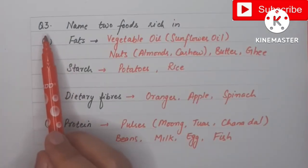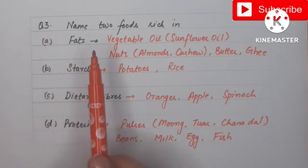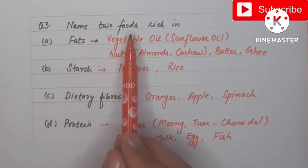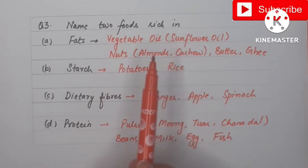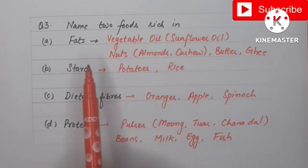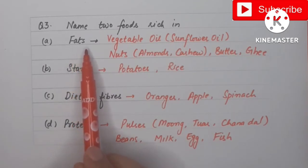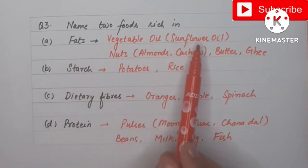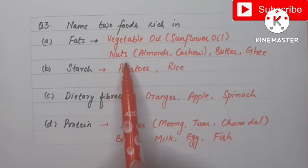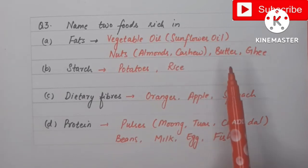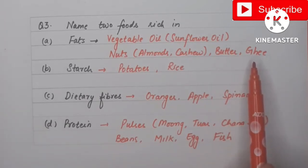Now moving to question 3, we have to give the names of two foods that are rich in certain nutrients. For fats, fats are present in vegetable oils like sunflower oil, and in nuts like almonds and cashews. Butter and ghee are also rich sources of fat.